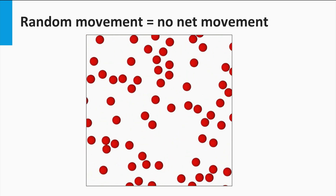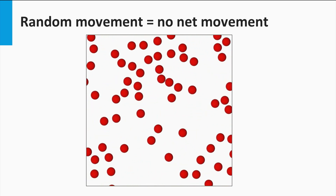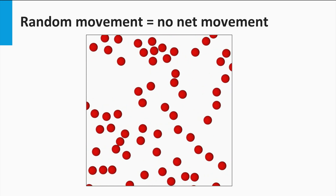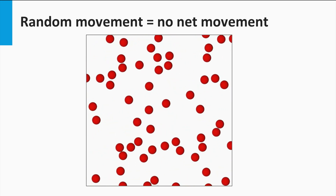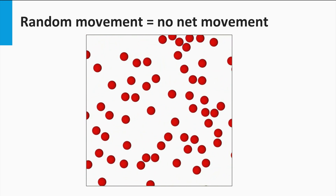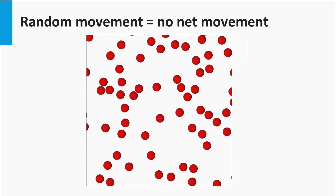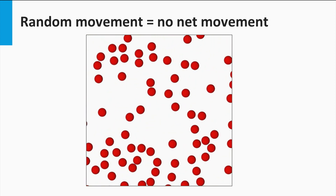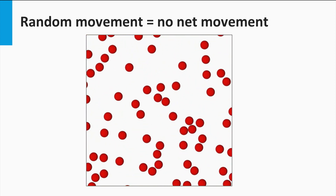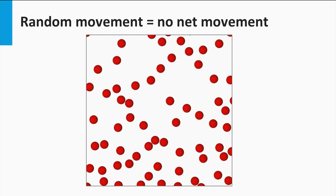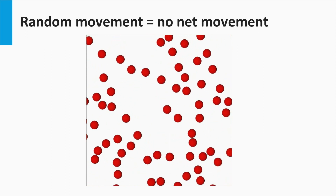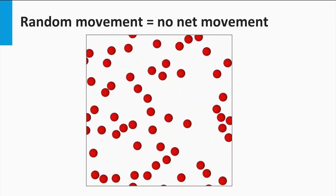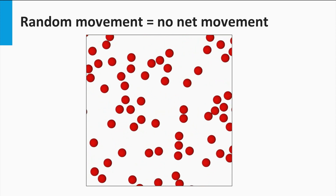Let's consider the situation where the density of particles is uniformly distributed — no density gradient exists. On average, the particles with a random walk will have no net movement. Just as many particles will move to the right as to the left, and just as many will move up as down.